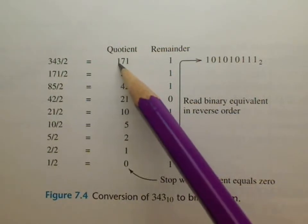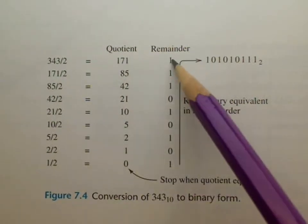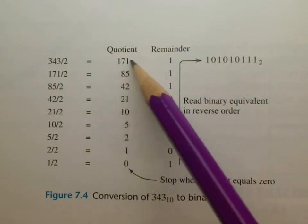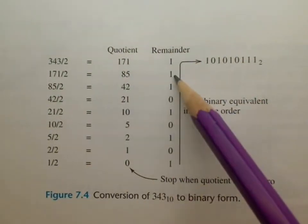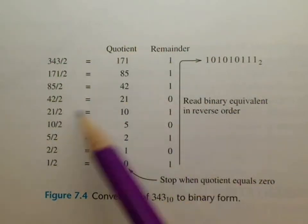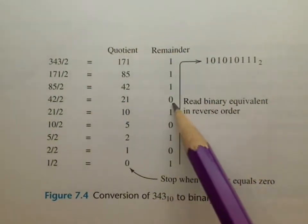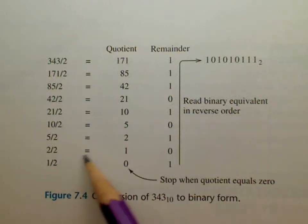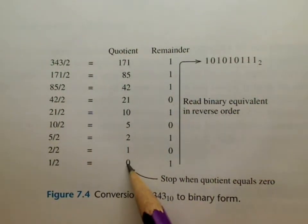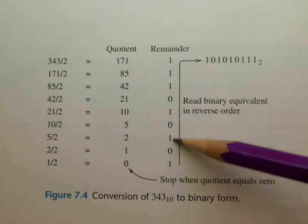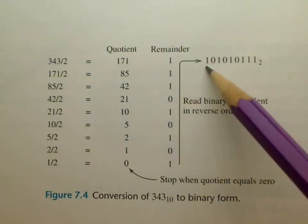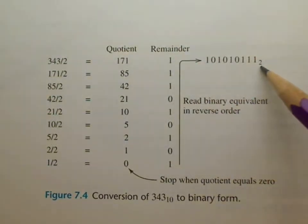You divide it by 2 and you get this number and you have a remainder of 1. Then you take this quotient and divide it by 2, you get another quotient and you have a remainder of 1. You keep doing that and you can see in this case right here you have a remainder of 0 and so forth all the way down. You keep repeating this process until you end up with a 0 in the quotient column. At that point you stop, you start from the bottom and you write 101010111 and that right there is your binary number.